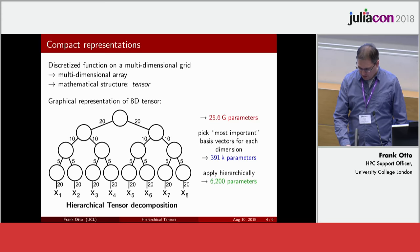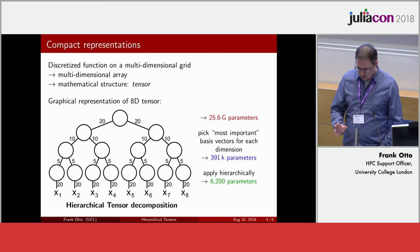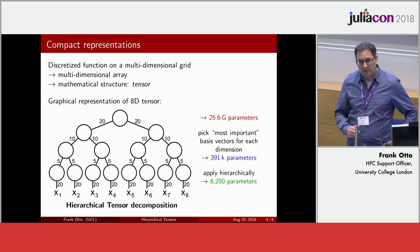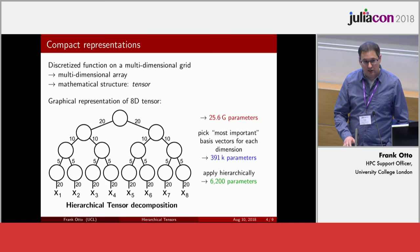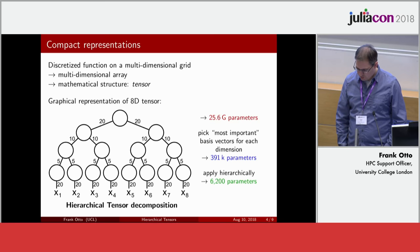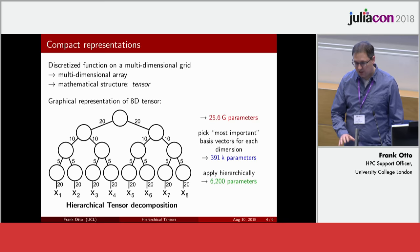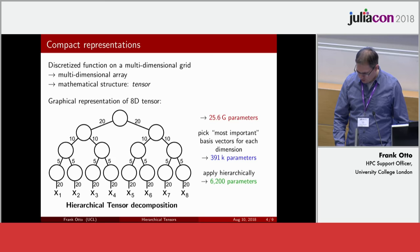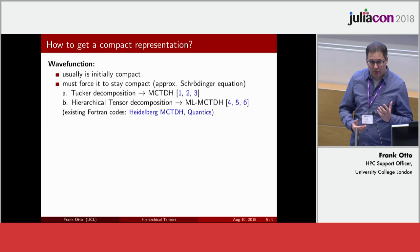This structure can be further improved by applying the idea hierarchically. For x1 and x2 you have 5 basis vectors each — 25 combinations — but maybe you only need to keep 10 of those. You apply this idea recursively to other pairs of coordinates, ending up with a hierarchical tensor decomposition. With the numbers here it works out to just 6,200 parameters to describe the originally 8-dimensional tensor. This is a way to compactly represent a high-dimensional object.